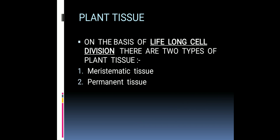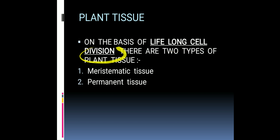We will start with plant tissue, and after completing plant tissue we will start with animal tissues. Plant tissue is categorized into two types on the basis of the lifelong cell division capability of the cell. One type is meristematic tissue and the other type is permanent tissue.